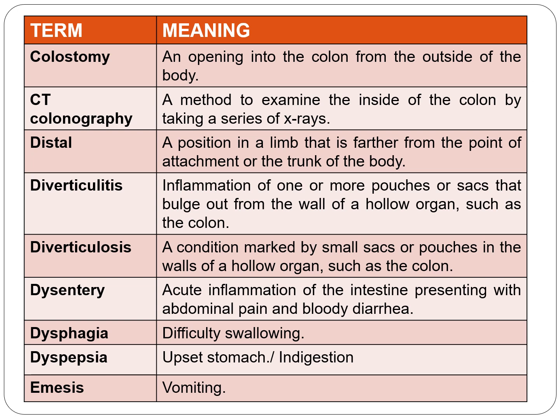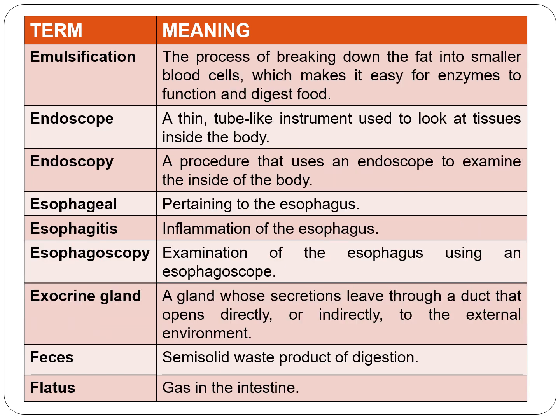Next is dyspepsia — upset stomach, more commonly known as indigestion. Next is emesis — vomiting. Next is emulsification — the process of breaking down fat into smaller molecules, which makes it easy for enzymes to function and digest food. Next is endoscope — a thin tube-like instrument used to look at tissues inside the body, whereas endoscopy is a procedure that uses an endoscope to examine the inside of the body.